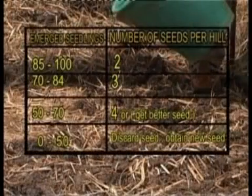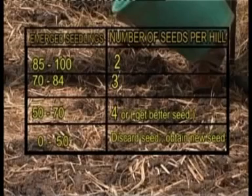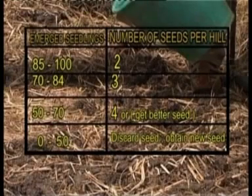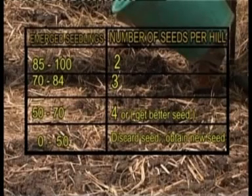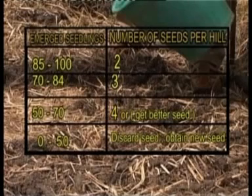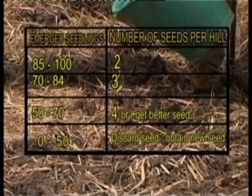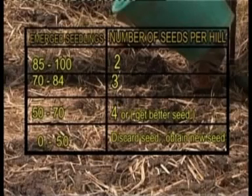The table shows the number of seeds to plant based on the results of the germination test. When emerged seedlings count between 85 to 100, plant two seeds per hill. Where emerged seedlings are between 70 to 84, plant three seeds per hill. When the number of emerged seedlings is between 50 to 70, plant four seeds per hill, or obtain a better seed. When emerged seedlings are between 0 to 50, discard the seed and obtain new seeds.